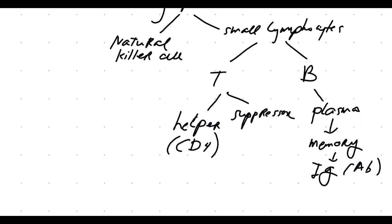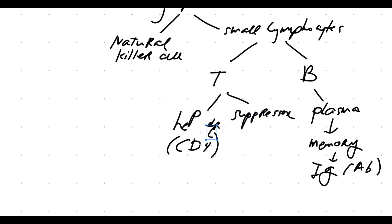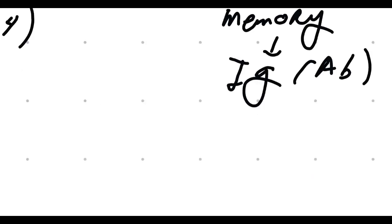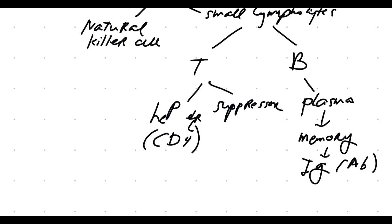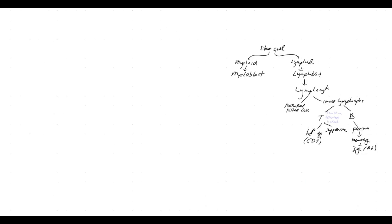The T cells have two main kinds. We already talked about natural killer T cells, and then there are also helper cells — that's your CD4, which is what's affected in AIDS — and then your suppressor cells, which balance that out. These cells fight against cancer cells and viral infection.